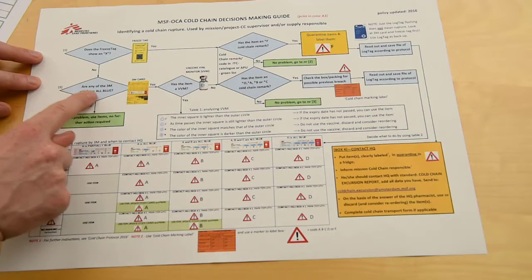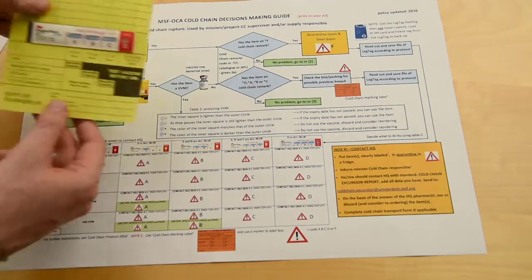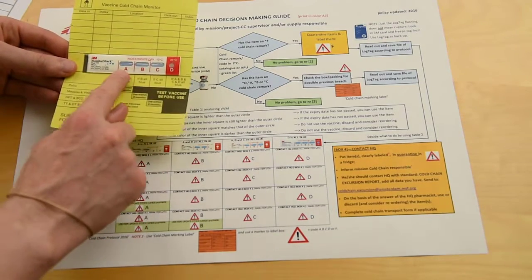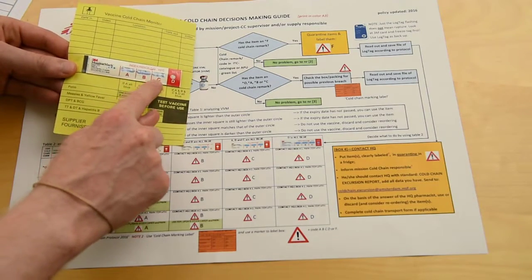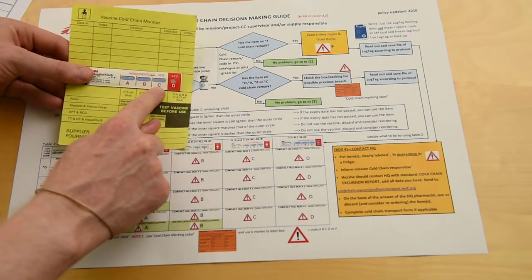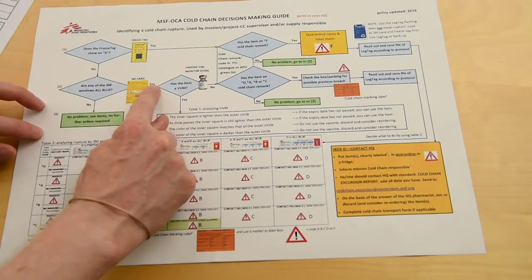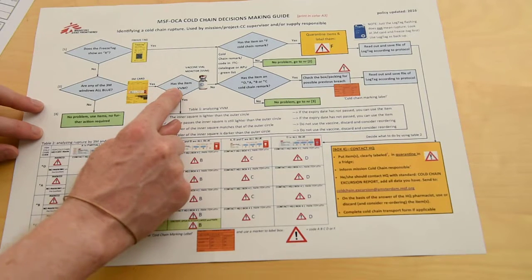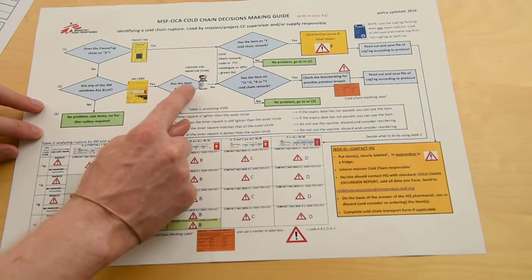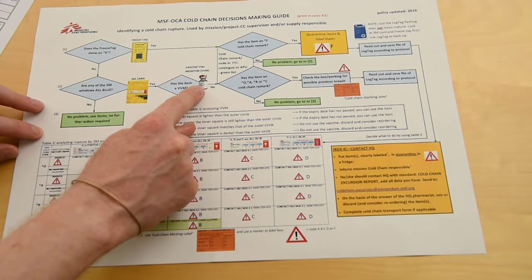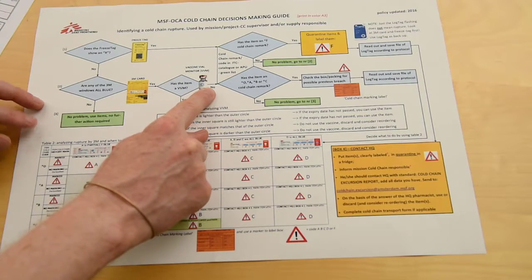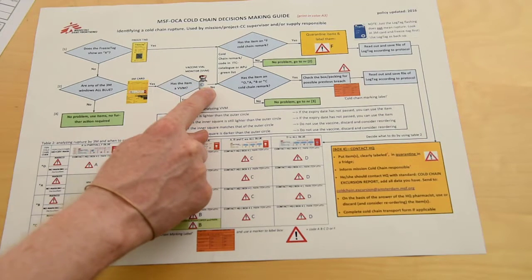Next we check the 3M card. Are there any windows all blue? We see A, B, C, and D windows are completely blue. Has the item a vaccine value monitor or VVM? In this case, no.